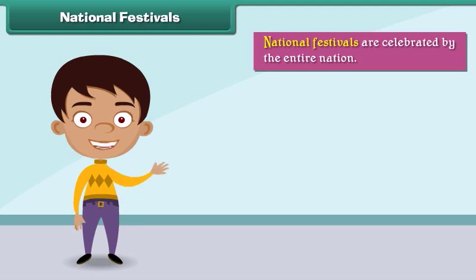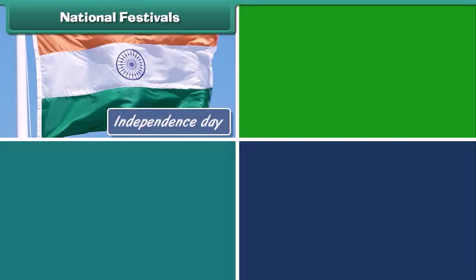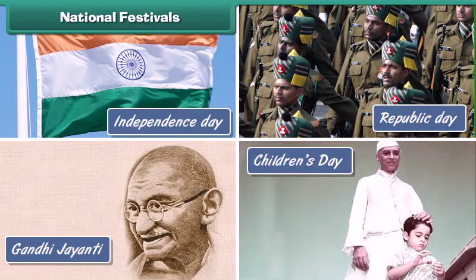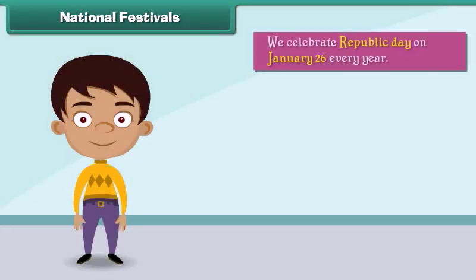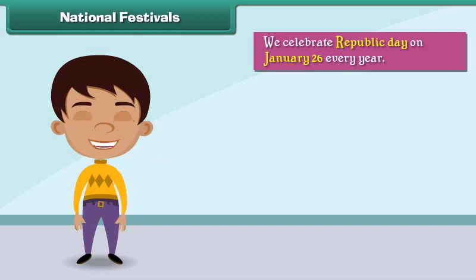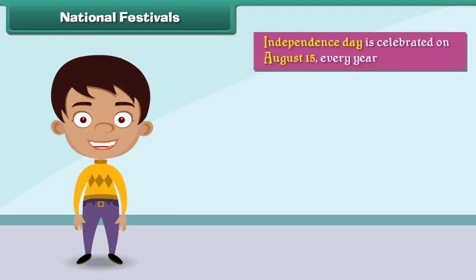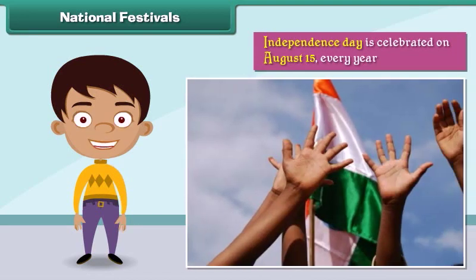Some important national festivals celebrated with great enthusiasm in India are Independence Day, Republic Day, Gandhi Jayanti, and Children's Day. We celebrate Republic Day on January 26 every year — on this day, the Constitution of India came into force. Independence Day is celebrated on August 15 every year, the day India got freedom from the British.